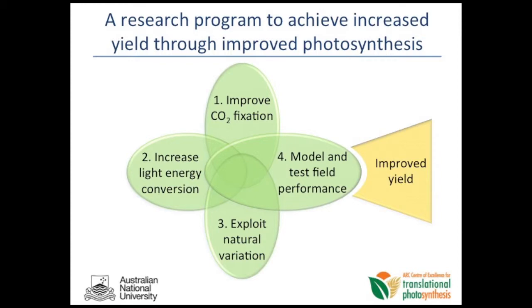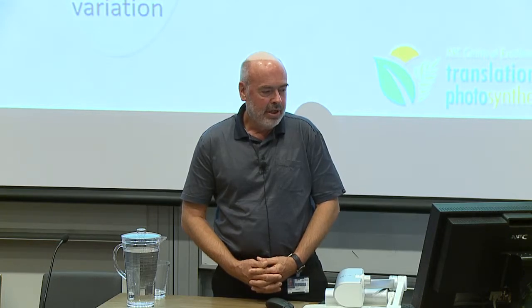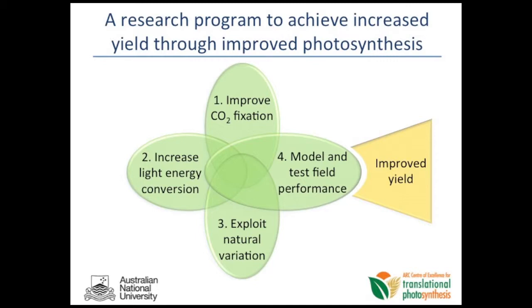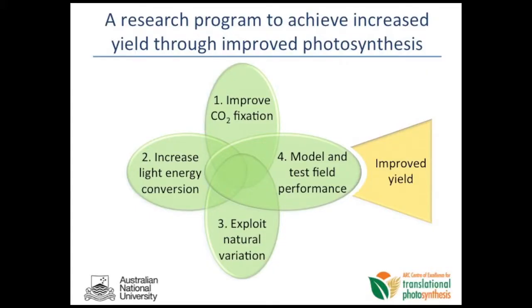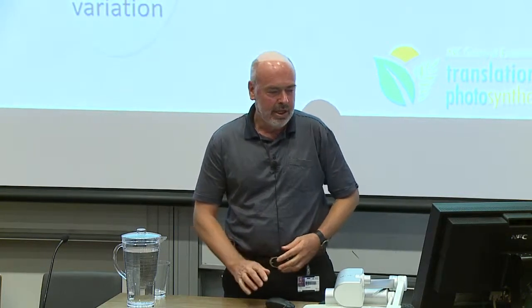We've got a research programme covering the various ways you can improve photosynthesis: a programme to look at improved CO2 fixation, covering how you can fix CO2 more effectively; increasing light energy conversion; exploiting natural variation; and bringing in modelling and field testing performance. One of the big challenges will be testing whether changes made through genetic interventions in light energy and CO2 fixation capabilities — and also selecting natural variants — actually perform in the field, and how we might expect them to perform based on models of photosynthesis. Hopefully this integrated effort will lead to improved yields and prove that improving photosynthesis can actually increase yield potential in C3 plants.